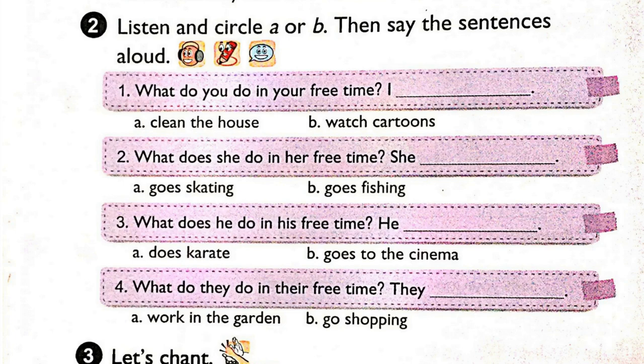Page 22. Lesson 3. Activity 1. Listen and repeat. 1. What do you do in your free time? I surf the internet. 2. What does he do in his free time? He listens to music.